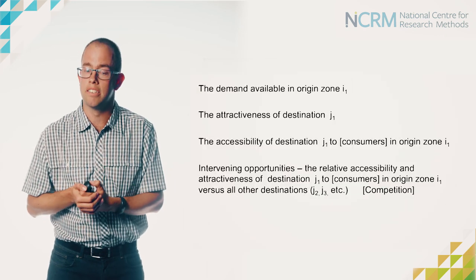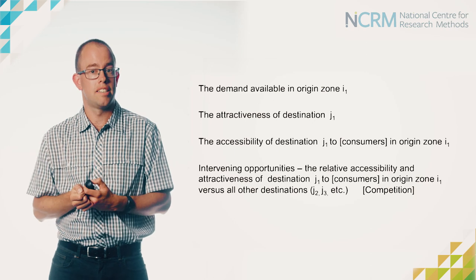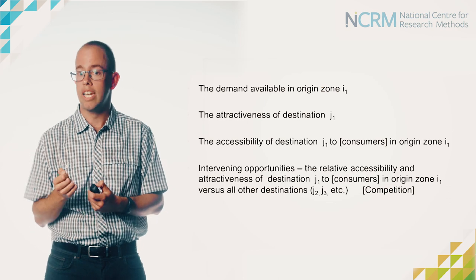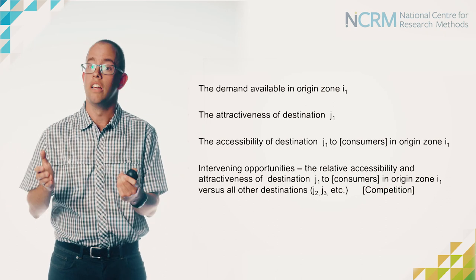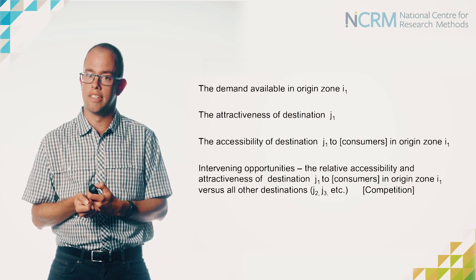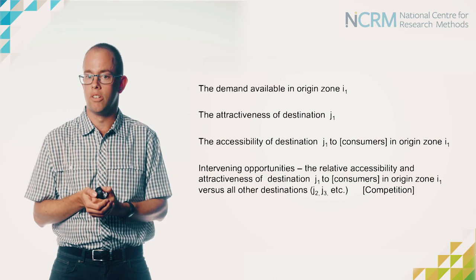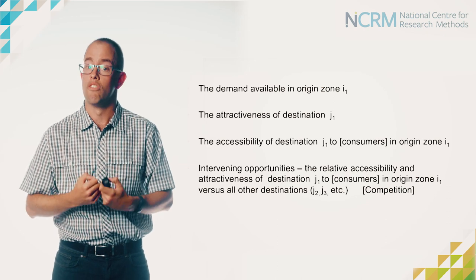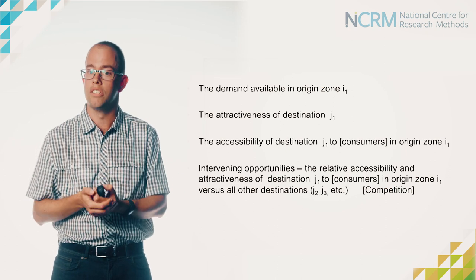In our model, thinking back to the example we looked at earlier, the flow we're predicting between origin zone i and a given destination j is going to be driven by a number of factors. It's going to be driven by the demand available in our origin zone — the amount of money that people have to spend, which we need to spread across the different destinations. It will be driven by the attractiveness of a given destination, and also by how accessible that destination is. And we know that there's competition involved — a number of competing destinations — so it will depend on the relative attractiveness and relative accessibility of that one destination versus all the others that the consumer could have visited.